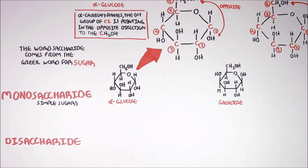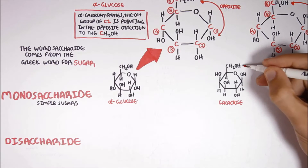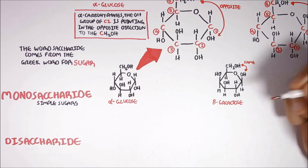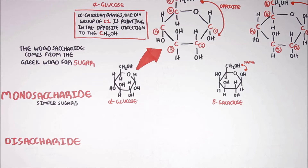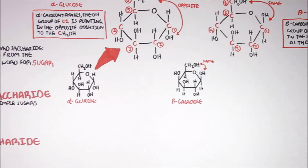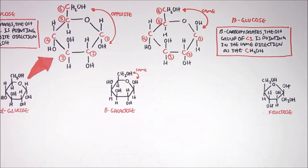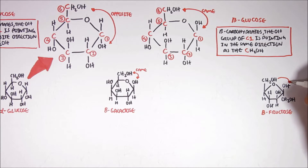These alpha and beta configurations also apply to other types of carbohydrates such as galactose as well as fructose. For example, this galactose molecule is actually a beta galactose, because the hydroxyl group here and carbon number six are pointing in the same direction. Similarly, this fructose here is actually in a beta configuration — a beta fructose — because the hydroxyl group here is pointing in the same direction as carbon number six.